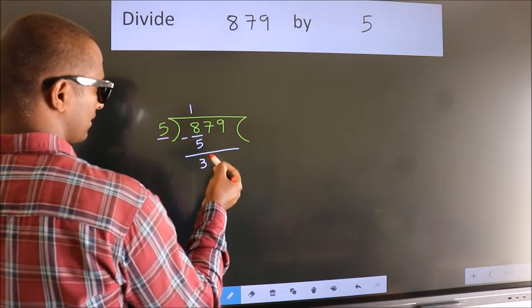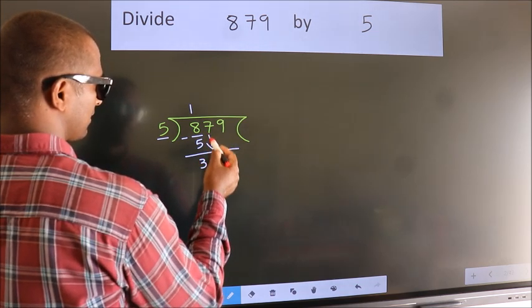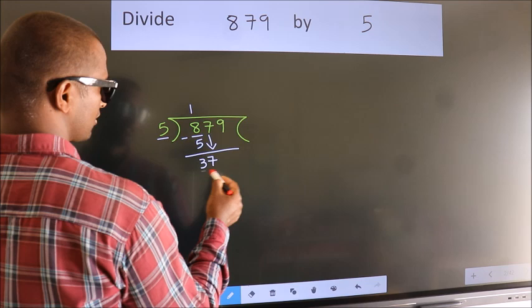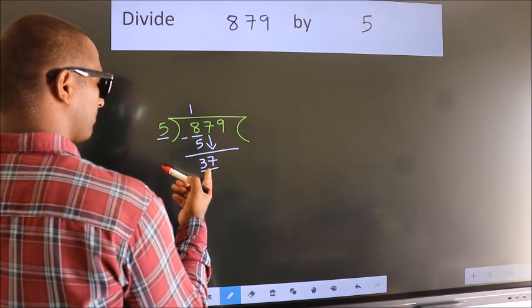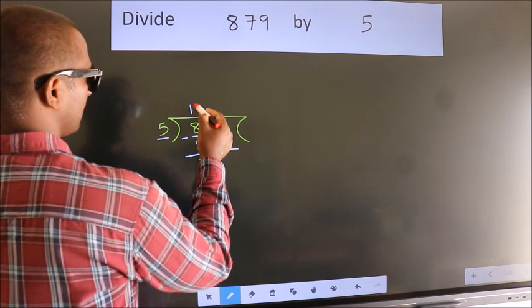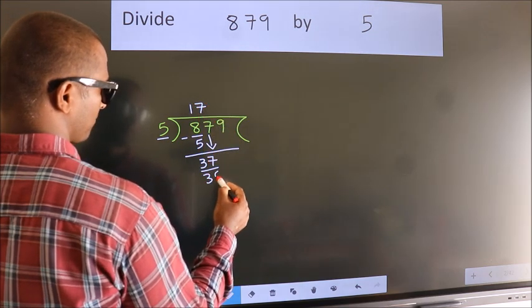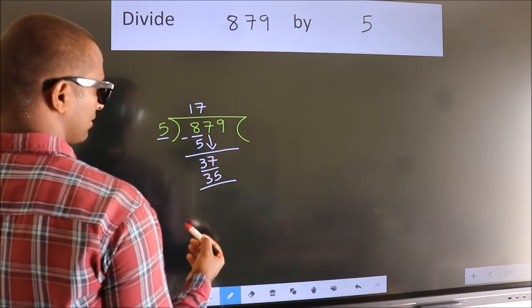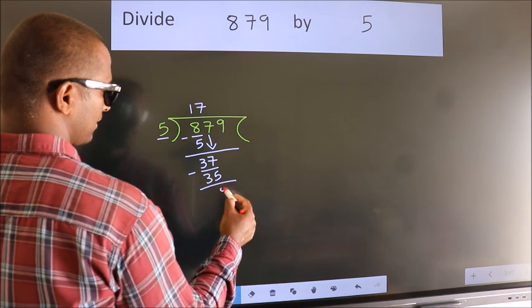After this, bring down the beside number. 7 down, so 37. A number close to 37 in the 5 table is 5 7s 35. Now we subtract. We get 2.